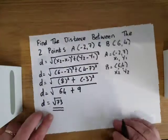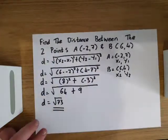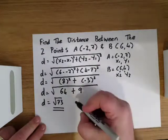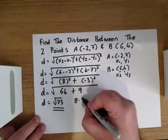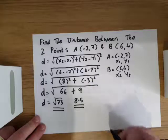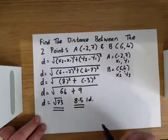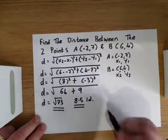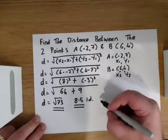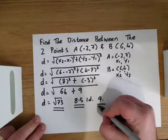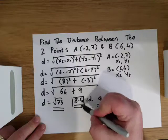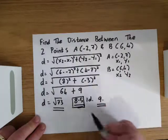Now we could leave the answer as root 73, but if we were asked for a decimal, root 73 becomes 8.5 to 1 decimal place, which would be fine. But if we were asked to round to the nearest whole number, 8.5 would round up to 9. Well, 8.5, for this purpose today, is perfect.